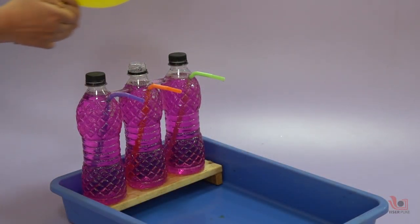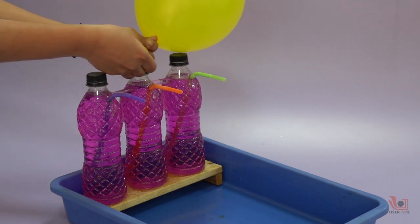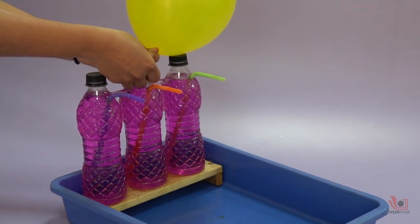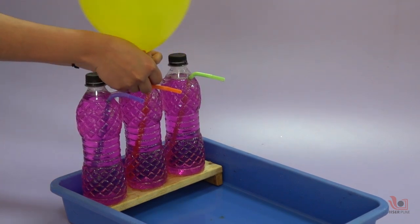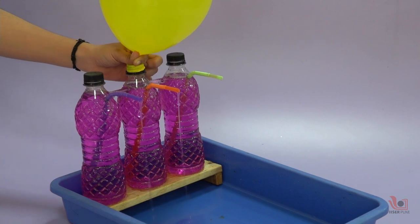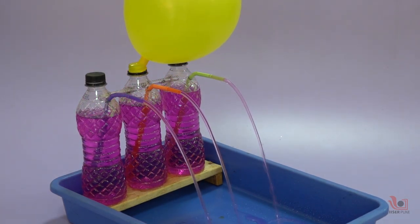Fill the three bottles with colored water. Place the assembly in the tray. Remove the cap of one of the bottles and fix an inflated balloon on it. When we release the hand, you will again find three water fountains.